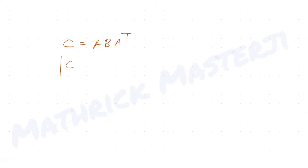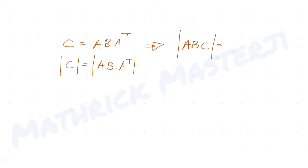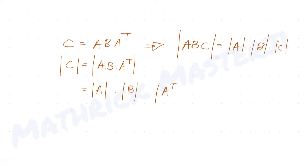First, let's find det(C). Since C = A·B·Aᵀ, we need det(A·B·Aᵀ). Using the property that the determinant of a product of matrices equals the product of individual determinants, we get det(A)·det(B)·det(Aᵀ).